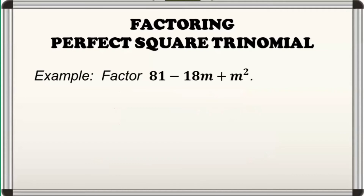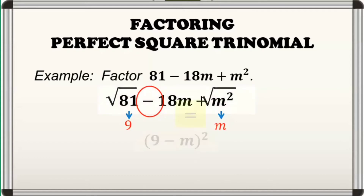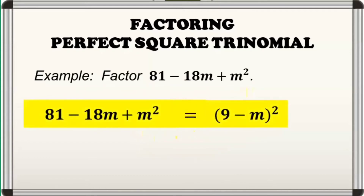For our fourth example, we have 81 minus 18m plus m squared. You may check that this one is indeed a PST, so we'll now proceed in factoring it out. The square roots of the first and last terms are 9 and m respectively. Using the square roots as well as the sign of the middle term, we have the square of binomial quantity 9 minus m squared, and it's the factored form of our given PST.